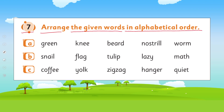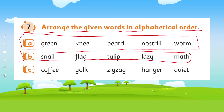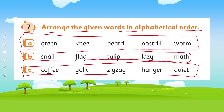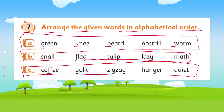Now let's practice. Question 7 is given in your book. You will arrange the given words in alphabetical order. There is a combination — these words, then this list and this list. How are you going to do it? Look at the first letter and write the complete word in the order those letters appear in ABC. That will be alphabetical order. So pause the video, complete this task in your notebooks, and then come back.